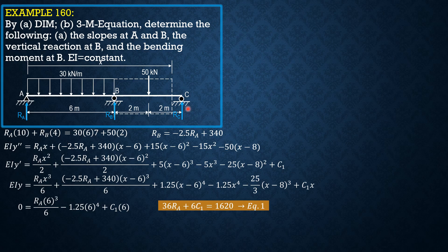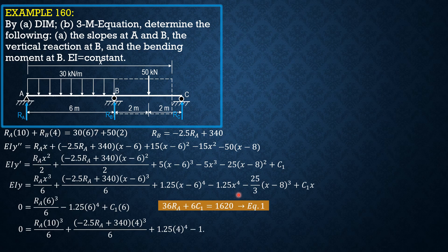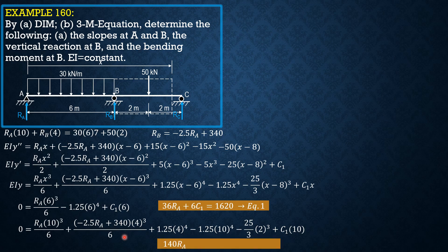When X is 10, at C, Y is 0. So 0 equals RA times 10 cubed over 6, plus (negative 2.5 RA + 340) times 4 cubed over 6, plus 1.25 times 4 to the 4th, minus 1.25 times 10 to the 4th, minus (25/3) times 2 cubed, plus C sub 1 times 10. Simplifying gives equation 2.